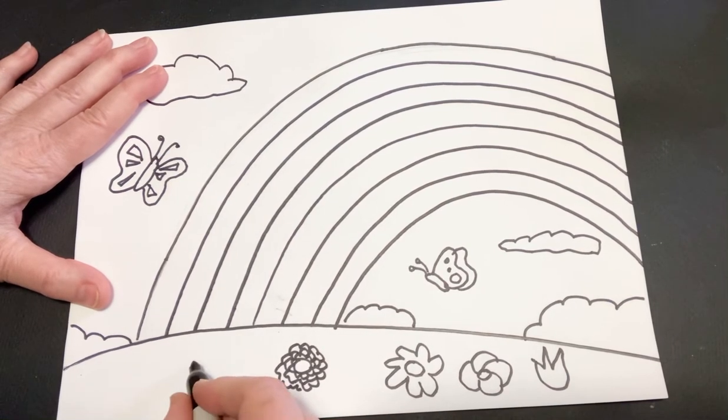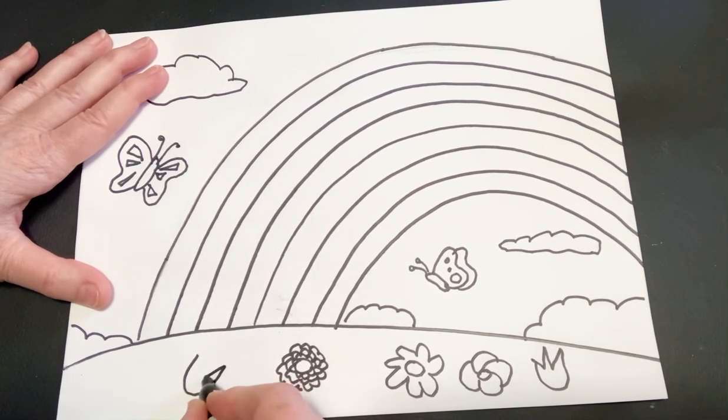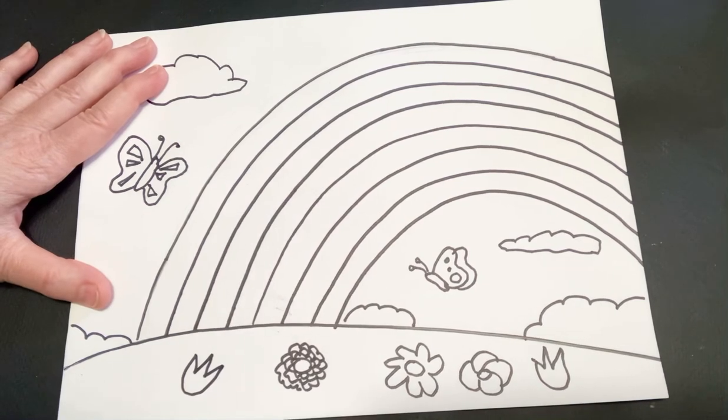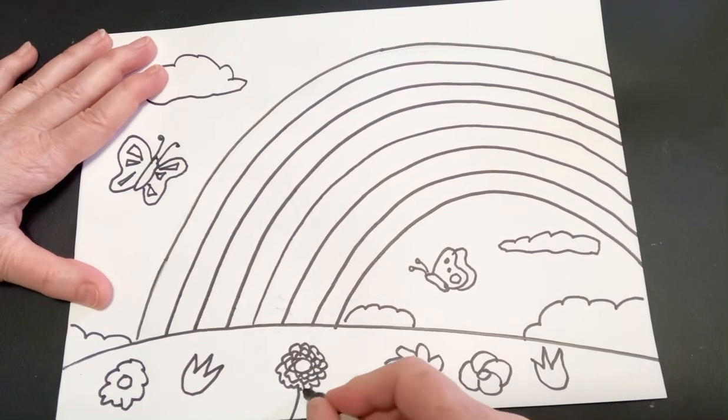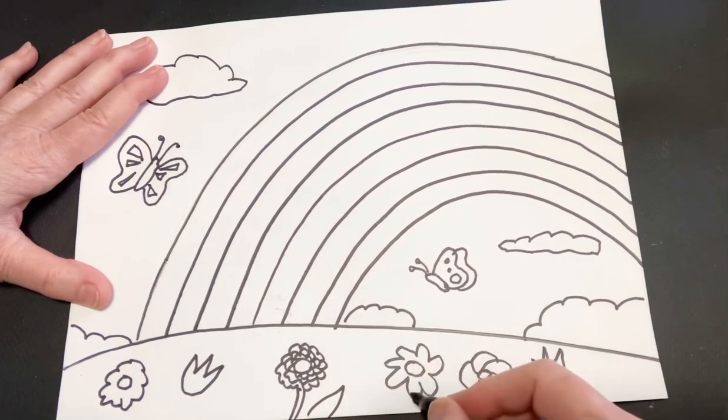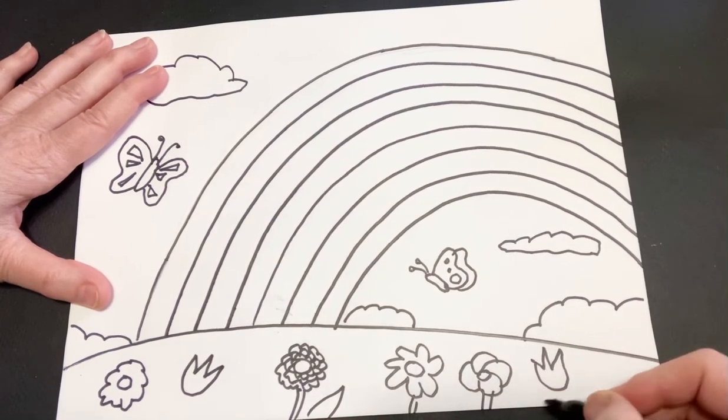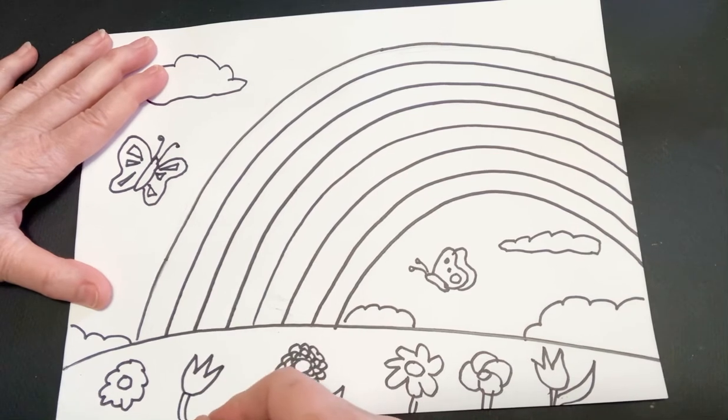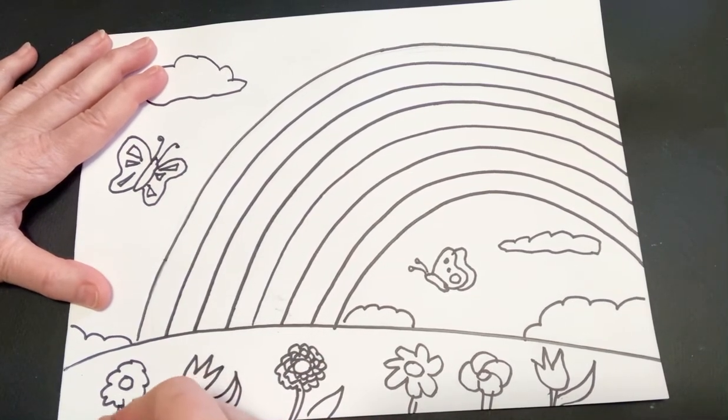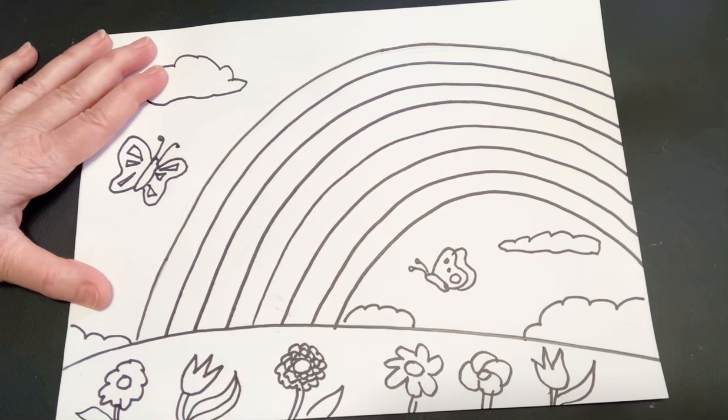I'm going to repeat a tulip. I feel like we need another one of these. And one more, like the first one. You can either leave it like that, or if you want to do a stem and some leaves, you could do that.